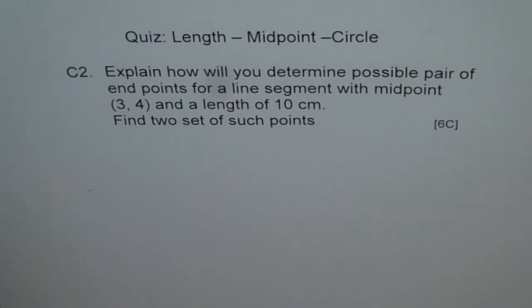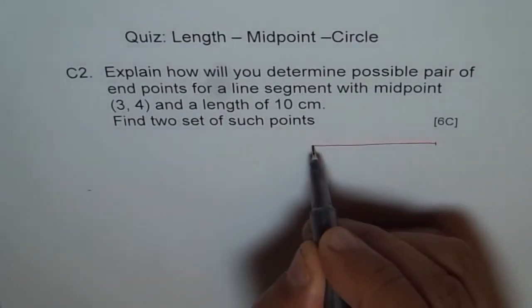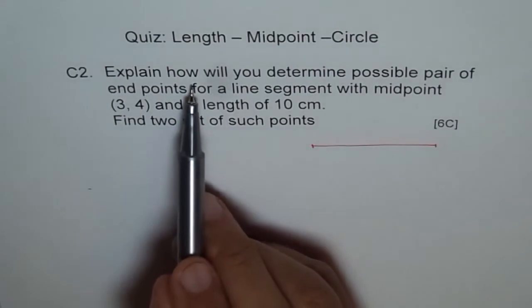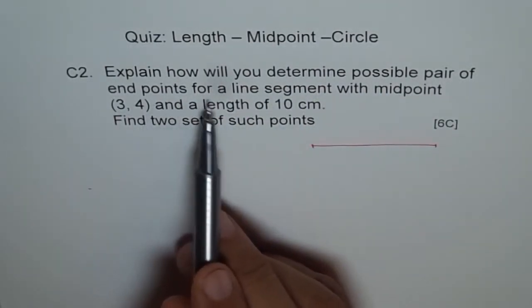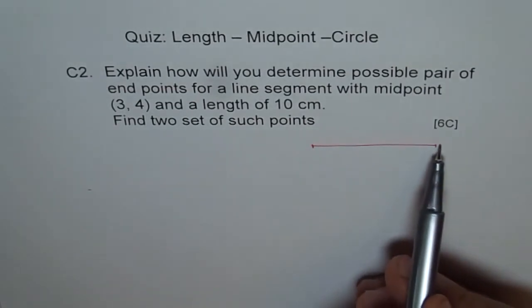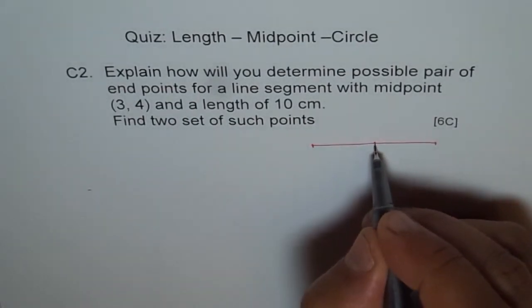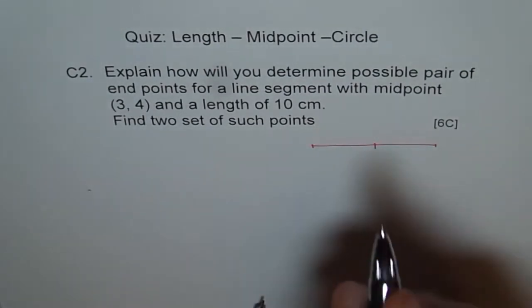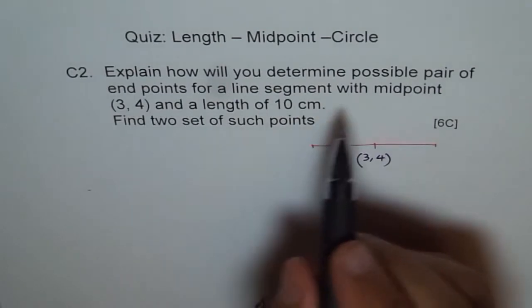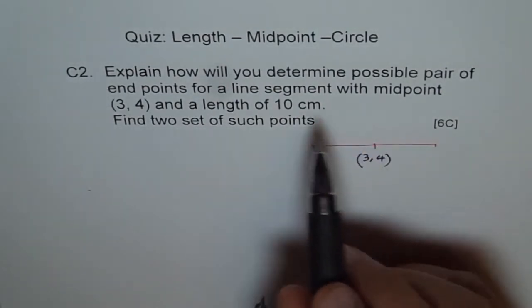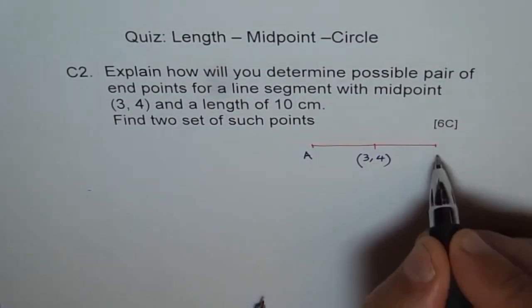That is interesting. So what we can do is we can just take a line here. It says explain how will you determine possible pairs of end points of a line segment. So that means these end points of a line segment with midpoint at 3,4. Let us say this is my midpoint and let me write this midpoint as 3,4. How will you determine possible pairs of end points? Let us say these are my end points, A and B.